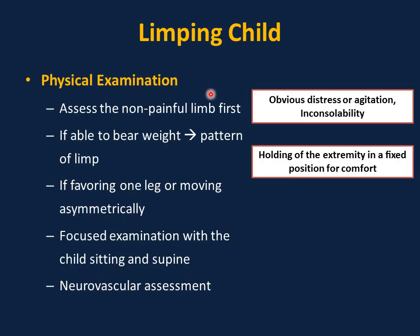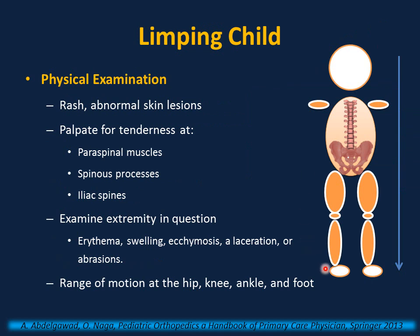During physical examination, observe the child for obvious distress or agitation, inconsolability, and holding the extremity in a fixed position for comfort — this is serious. Assess the non-painful limb first. If able to bear weight, assess the pattern of limp. If favoring one leg or moving asymmetrically, focus the examination with the child sitting and supine to find the focus of distress and point of tenderness, and perform neurovascular assessment as in cases of compartment syndrome. Examine the child from head to toe and check the skin for rash or abnormal skin lesions. Positive findings may suggest reactive arthritis.